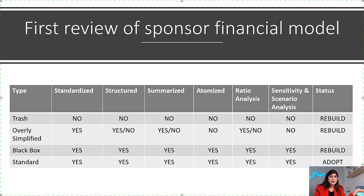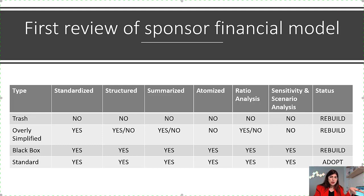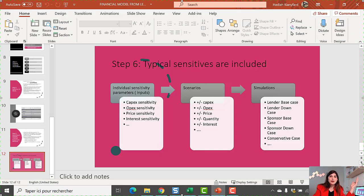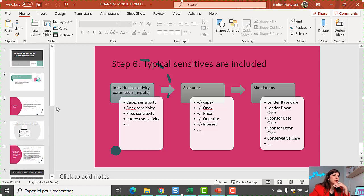If a model is overly simplified — for example, if projections are on an annual basis only — that might be an oversimplification, because debts are mostly repaid on a periodic basis, quarterly or semi-annually. If the model is on an annual basis and you don't have the flexibility to change that, it may be better to rebuild the model from scratch because it doesn't allow you to see the periodic projections.